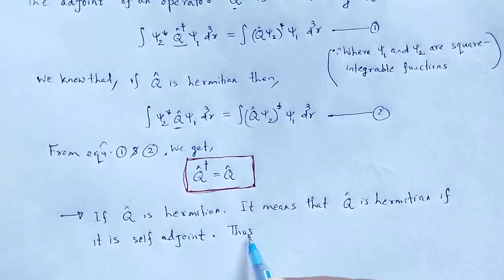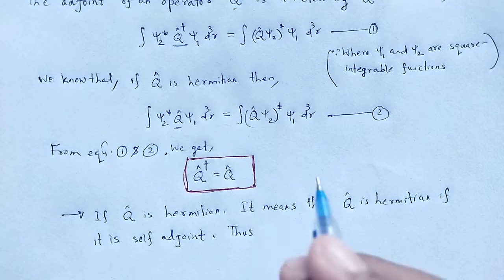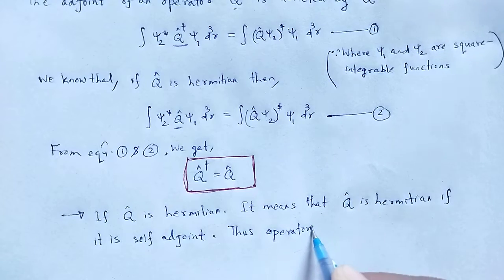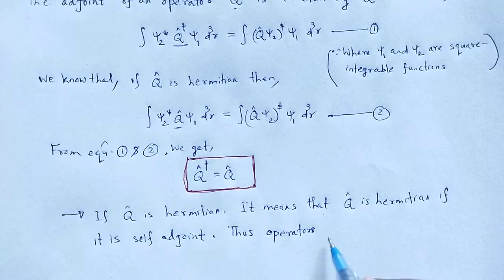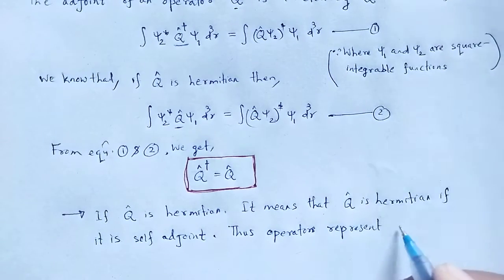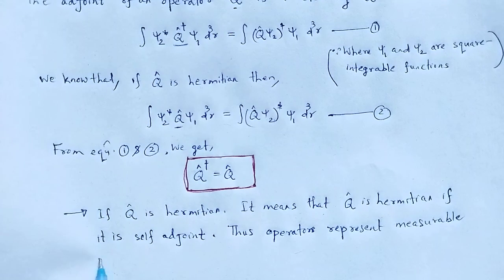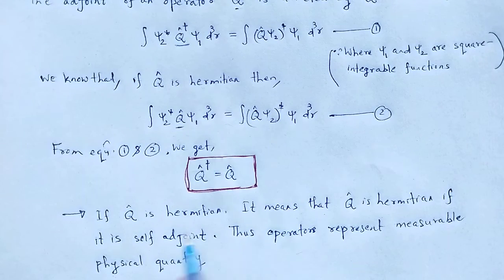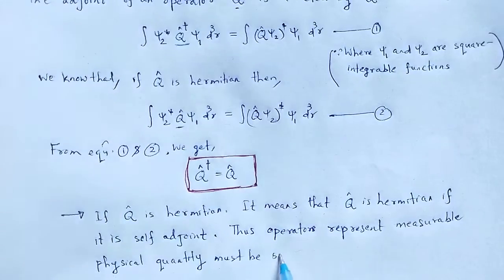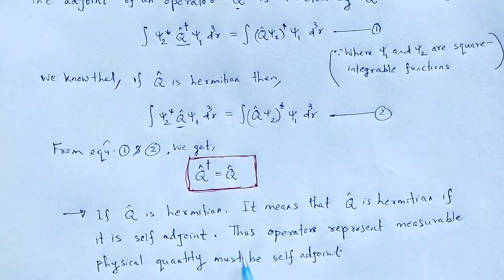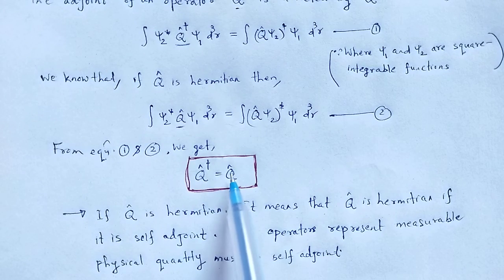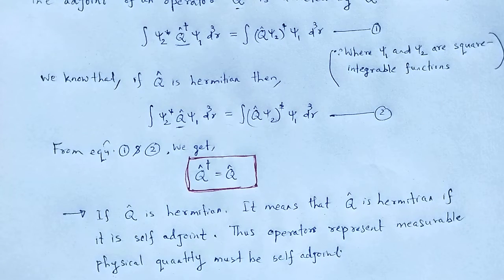Thus, the operators that represent measurable physical quantities must be self-adjoint. These are the physical significance of the given equation: Q-dagger equals Q, where Q-cap is the operator. Now some properties related to harmonic conjugate, or we can say adjoint of an operator.